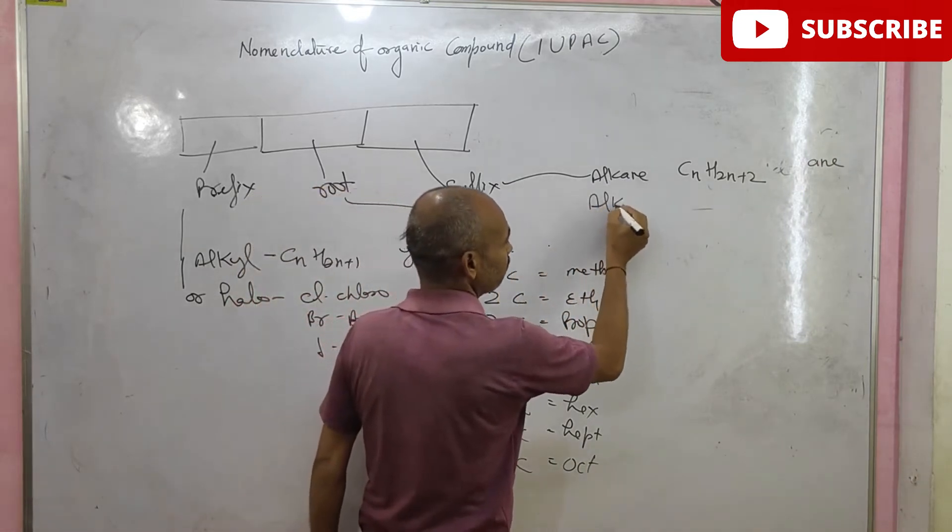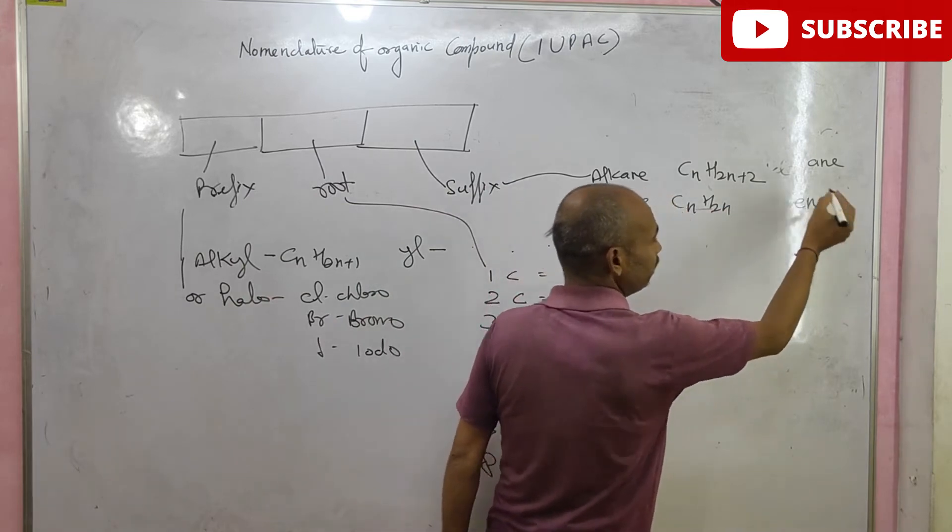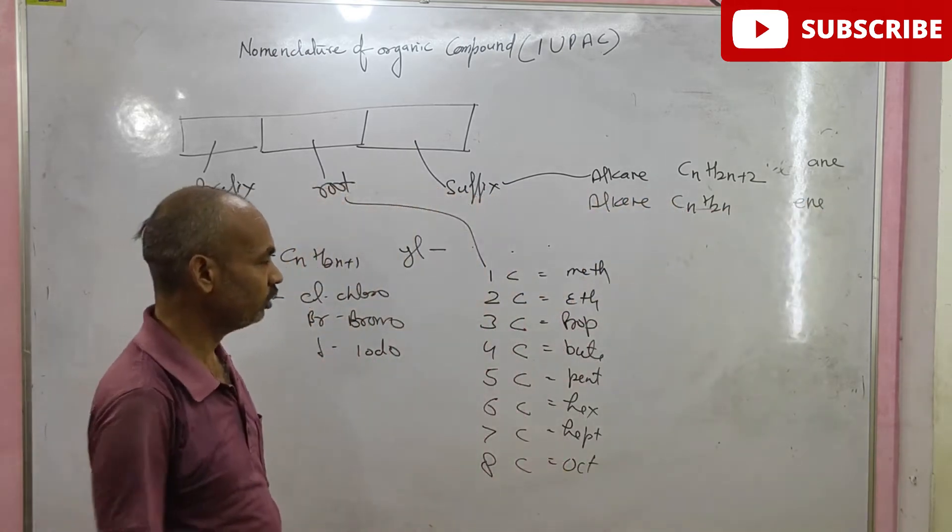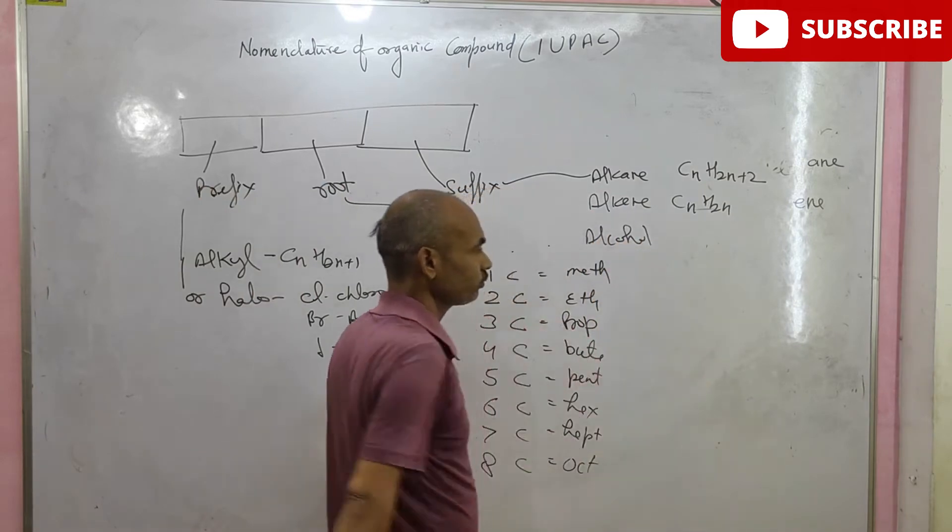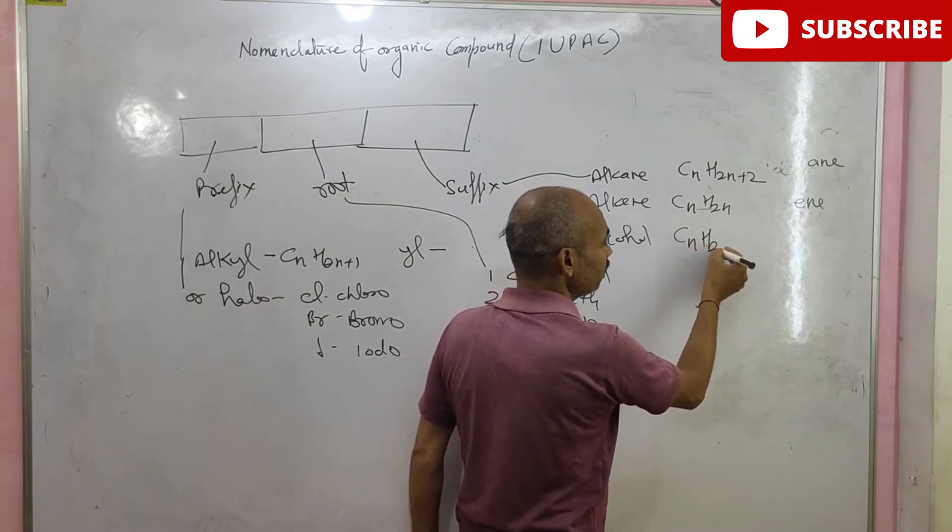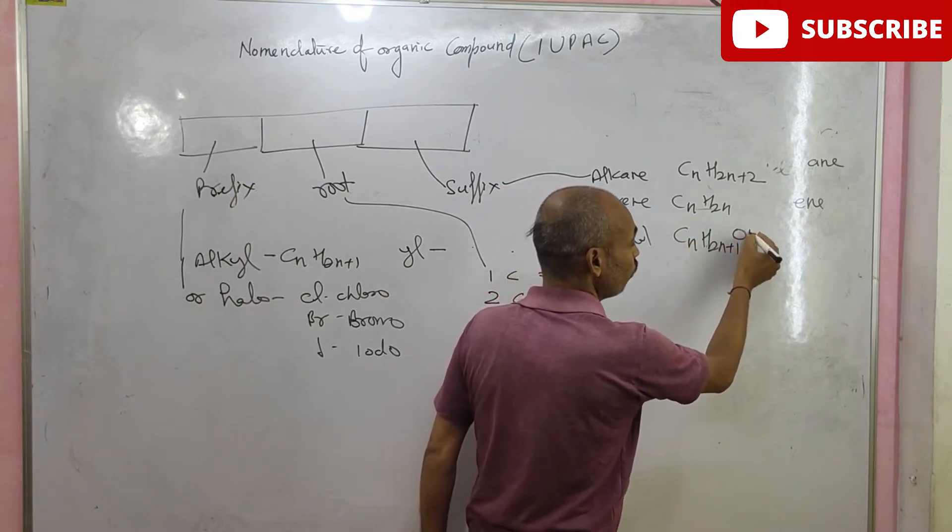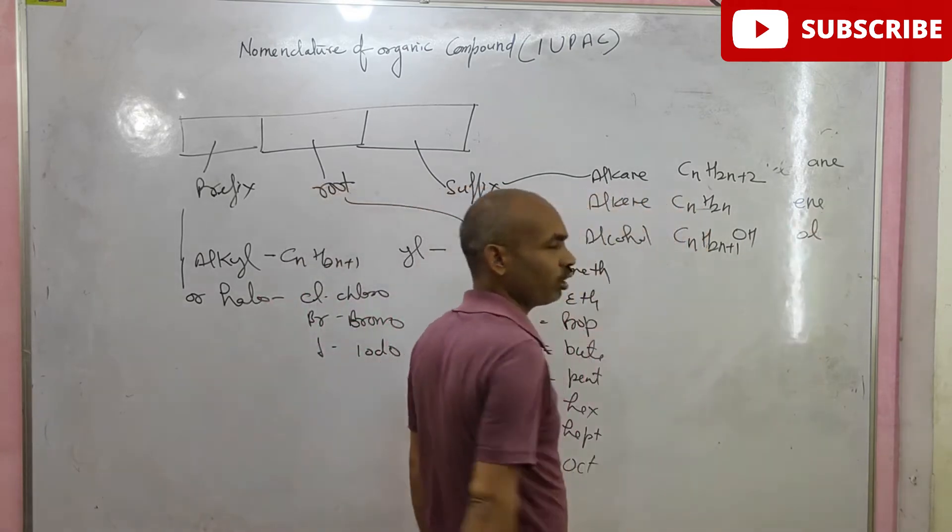If alkene, CNH2N, suffix is ene. If alcohol, then this is general formula: CNH2N plus 1 OH. And suffix is completely ol.